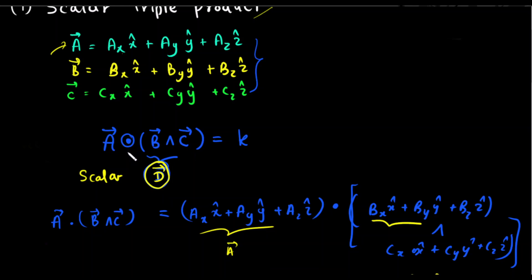In the scalar triple product, we can write A dot (B cross C). B cross C gives you a vector — let's call it D. So now you have a dot product of two vectors: A dot D. This dot product gives you a scalar, let's call it K. Now I'm going to derive a general expression for the scalar triple product.